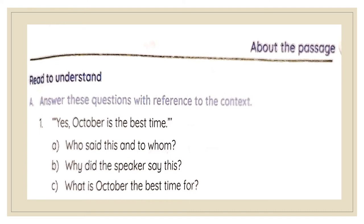Let us now come to the textual exercises. Answer these questions with reference to the context. 'Yes, October is the best time.' Who said this and to whom? The narrator said this to the girl. Why did the speaker say this? The narrator said this in response to the girl saying that she loved the hills in Mussoorie, especially in October. October is the best time to visit Mussoorie: the hills are covered with wild dahlias, the sun is delicious, one can sit in front of a log fire, and most of the tourists have gone so the roads are quiet and almost deserted.